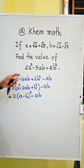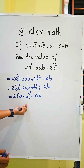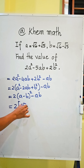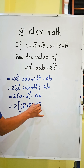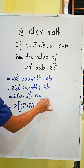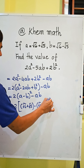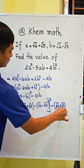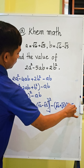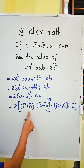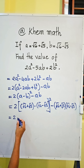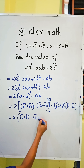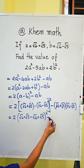This verifies our formula, giving us 2 times (a minus b) all squared minus ab. Now we replace a and b with their values. We get 2 times (square root 6 plus square root 5 minus square root 6 minus square root 5) all squared, minus (square root 6 plus square root 5)(square root 6 minus square root 5).